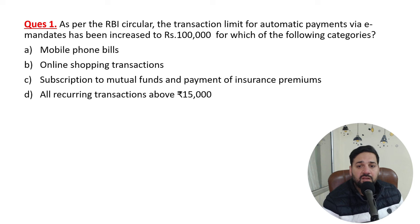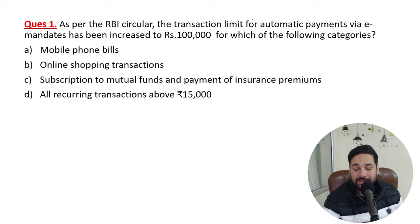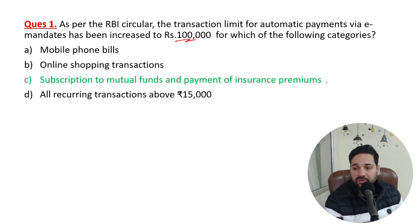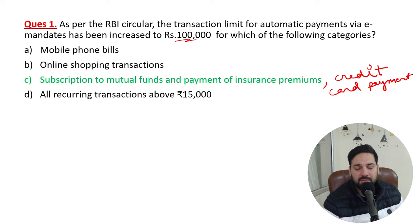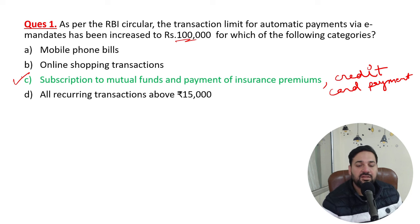As per the recent RBI circular, the transaction limit for automatic payments via e-mandates has been increased to 1 lakh rupees for subscription to mutual funds, payment of insurance premiums, and credit card payments. For all other payments, the limit remains at 15,000 rupees.